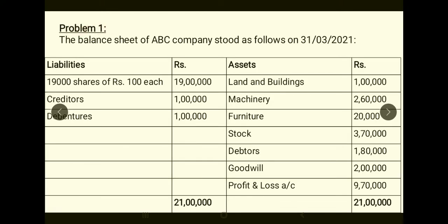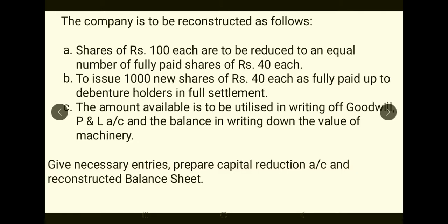Problem 1. The balance sheet of ABC Company stood as follows on 31st March 2021. You can see shares of Rs.100 each, creditors and debentures and the list of assets. P&L Account and Goodwill have a huge combined value of Rs.11,70,000. Now the company is to be reconstructed as follows.